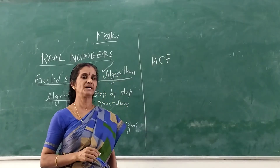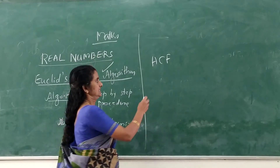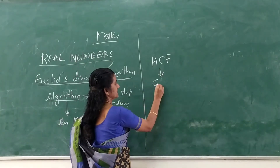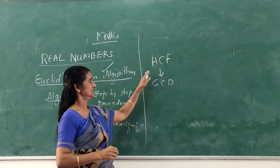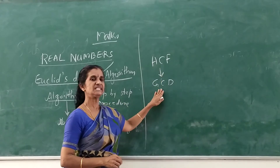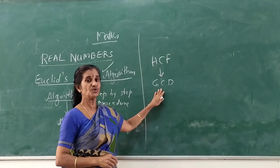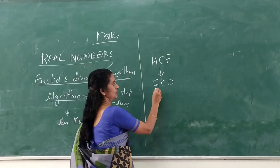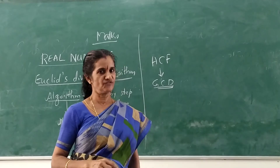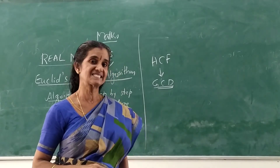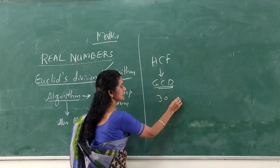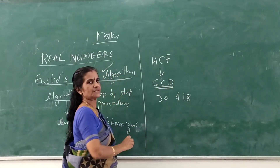Let us see what is meant by the HCF of two given numbers. Children, you are familiar with the term GCD — the Greatest Common Divisor. You know how to find the GCD of two given numbers by factorization. Now let us recall the steps involved in finding the GCD of two numbers, 30 and 18, by factorization.